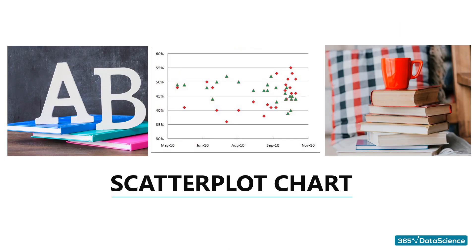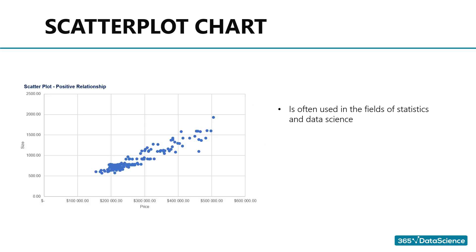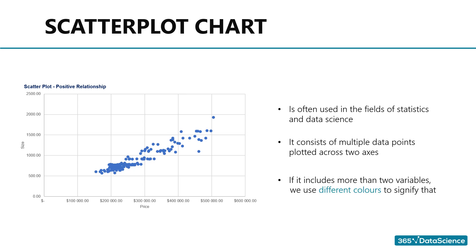A scatter plot is a type of chart that is often used in the field of statistics and data science. It consists of multiple data points plotted across two axes. Each variable depicted in a scatter plot would have multiple observations. If a scatter plot includes more than two variables, then we would use different colors to signify that.